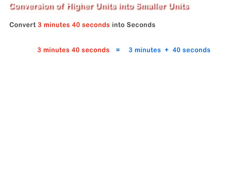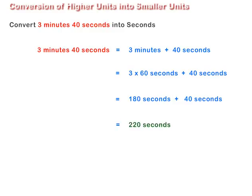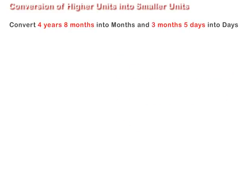3 minutes are equal to 3 multiplied by 60 plus 40 seconds, or 180 seconds. Adding 180 seconds and 40 seconds, we get 220 seconds. Let us now convert 4 years 8 months into months.